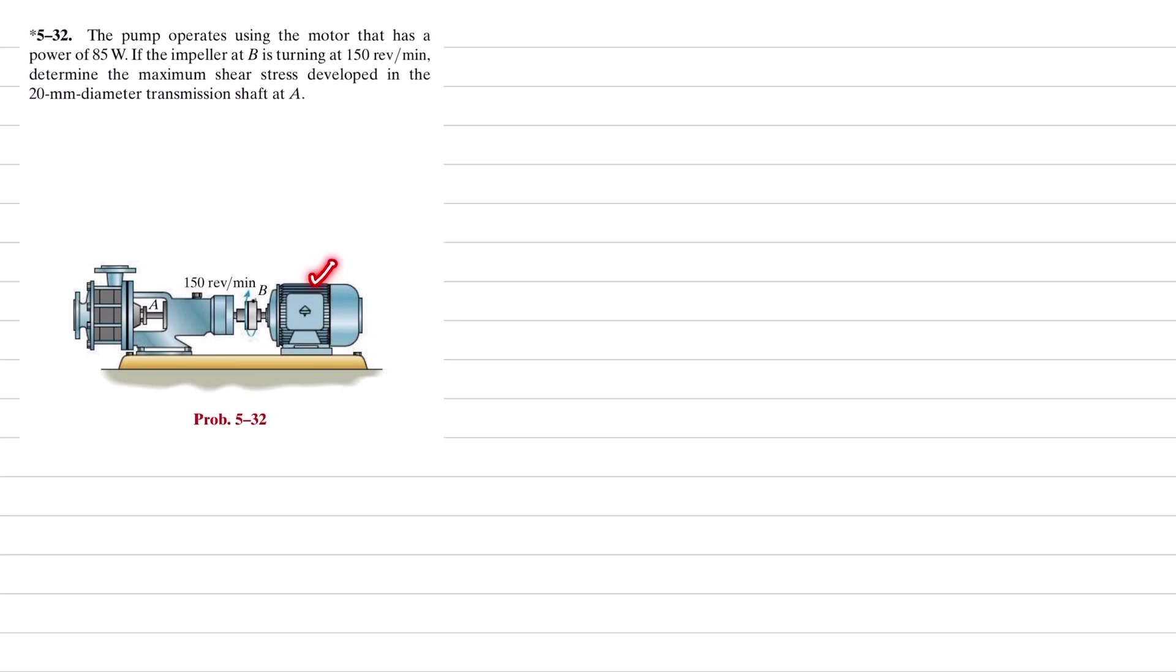You can see this is the pump that has a power of 85 watts and its impeller is rotating at 150 revolutions per minute. So we need to determine the maximum shear stress in the 20 millimeter shaft transmission shaft at A. Let's start with the solution.